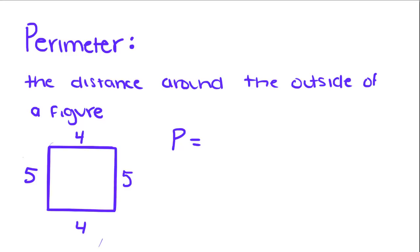We're switching focus today a little bit, and we're going to talk about the perimeter of polygons. The perimeter of a polygon is the distance around the outside of a figure.